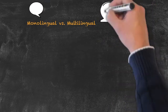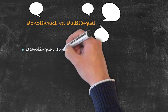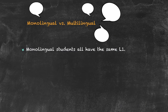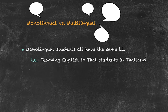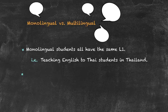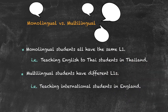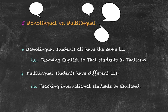The final grouping is the difference between monolingual and multilingual classes. Monolingual students all share the same native language, typically taught in their home country — for example, teaching English to Thai students in Thailand, where the vast majority speak Thai as their L1. A multilingual class has students with a range of different first languages, such as a class in an English-speaking country like England.